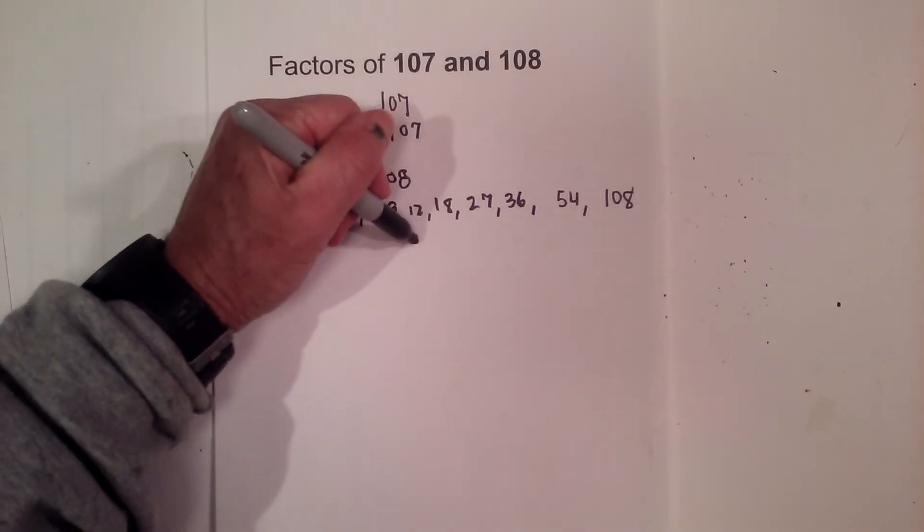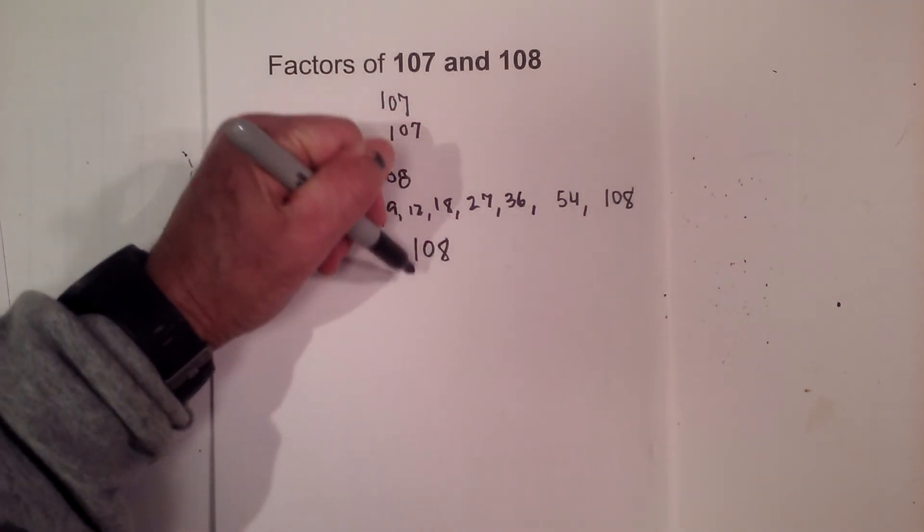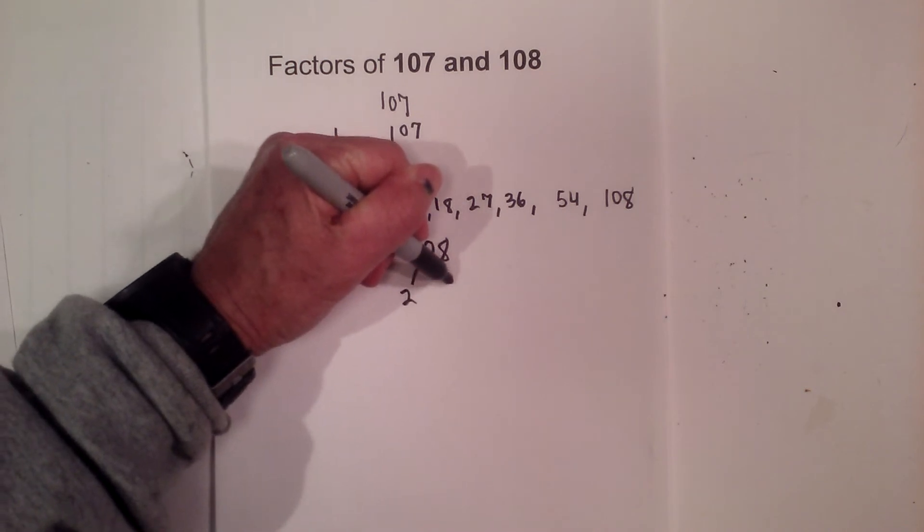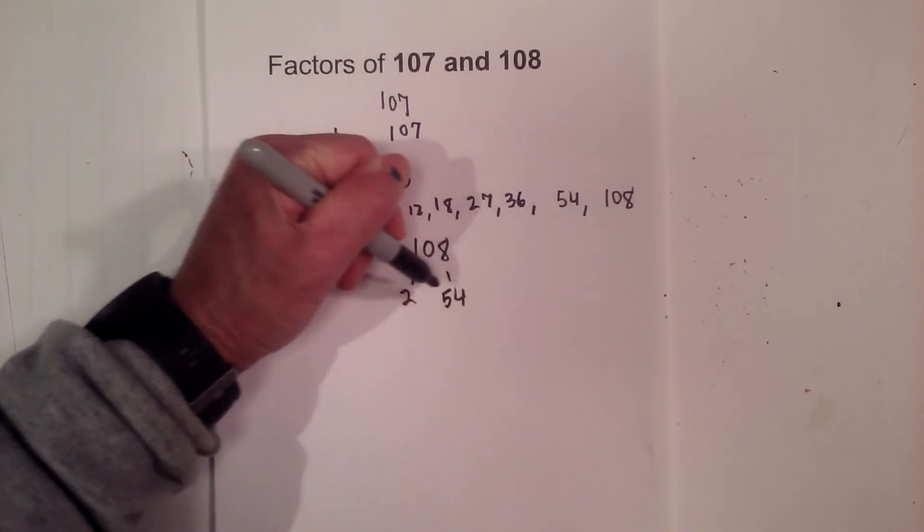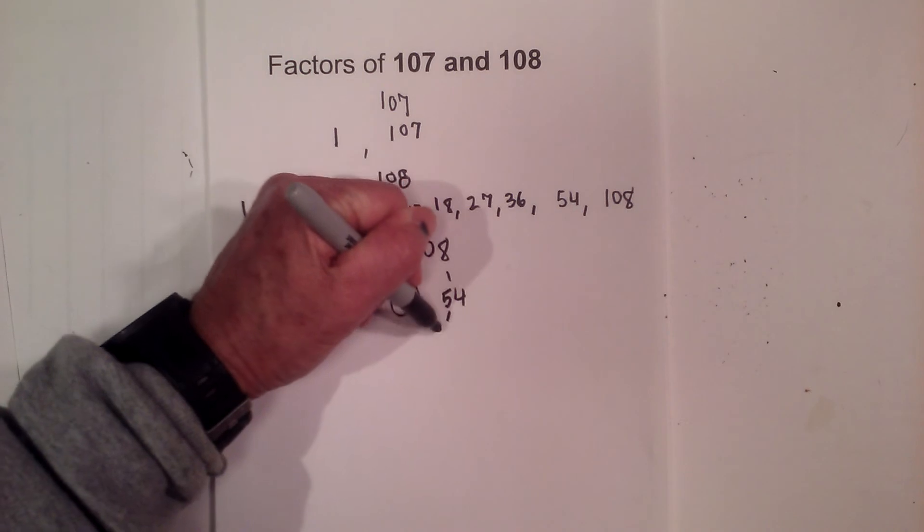Now, the prime numbers of 108. I'll complete a factor tree. And we can begin with 2 times 54. Circle the 2 because it is prime.